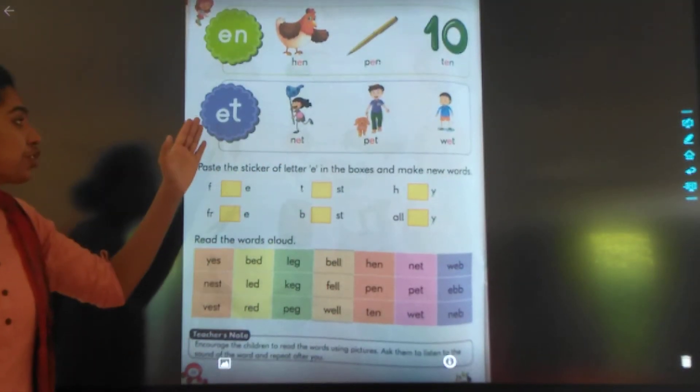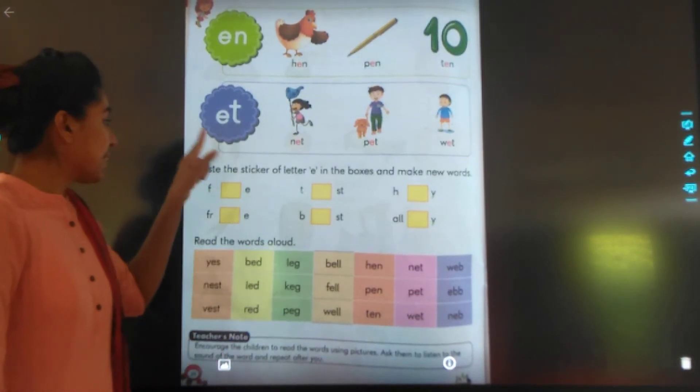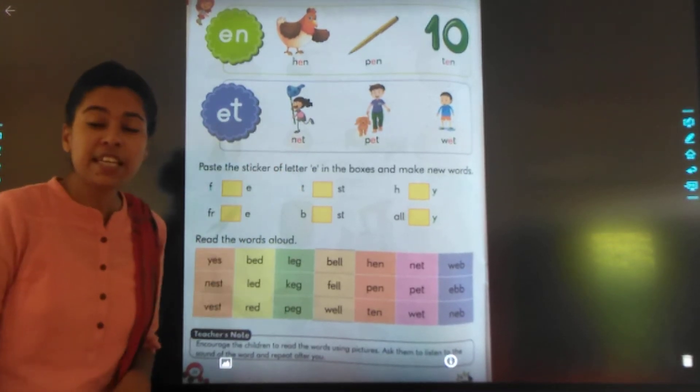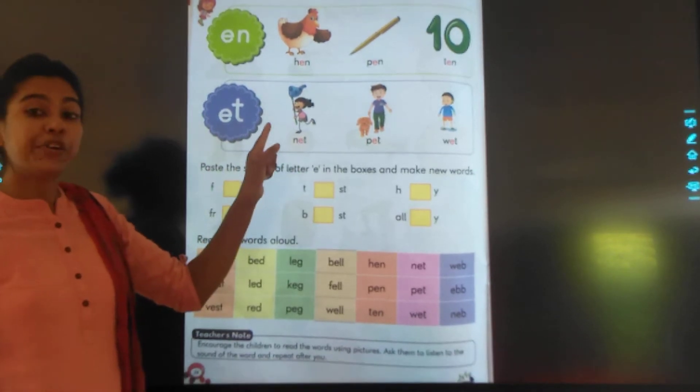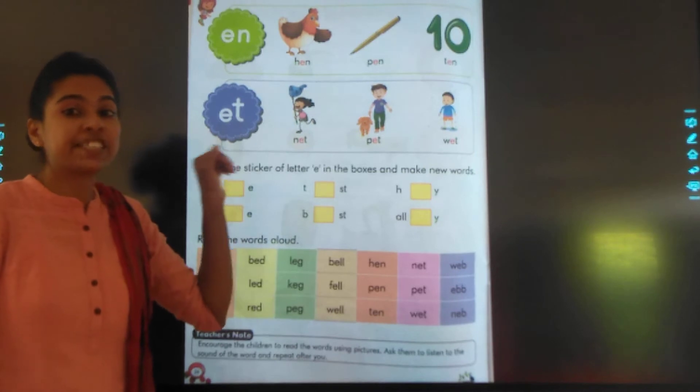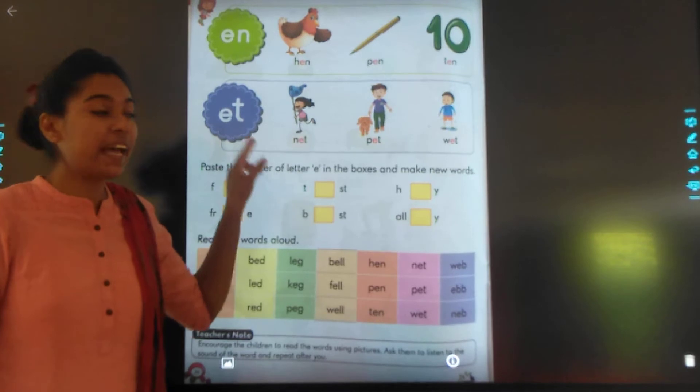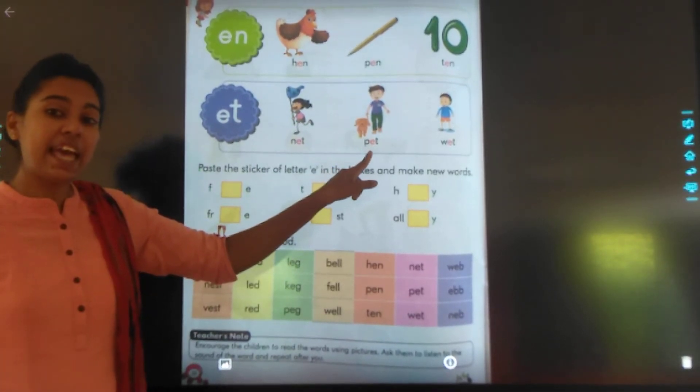The next two little words is E-T-T, E-T-T. Repeat with me E-T-T. N-N-E-T-T, net. Net.